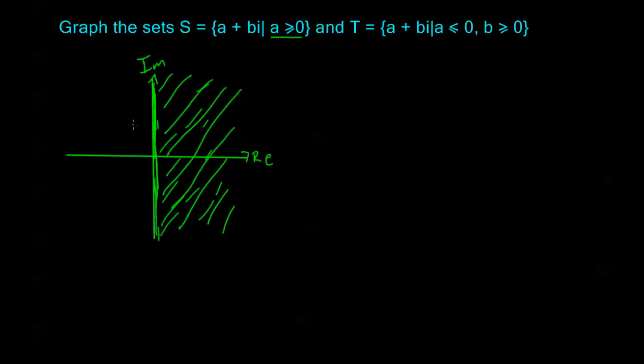Now taking a look at T. T is A plus BI. Let's go ahead and draw our coordinate system where A is less than or equal to 0 and B is greater than or equal to 0. So this is my real axis and this is my imaginary axis.